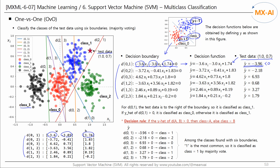This means that the test data point is 3.96 away from the D(0,1) boundary towards class 1. The second Y hat has magnitude 2 at 1.8 — it is 2.18 away from the D(0,2) boundary towards class 2. If the decision function value Y hat of boundary D(A, B) is positive, it is predicted as class A; otherwise it is predicted as class B.